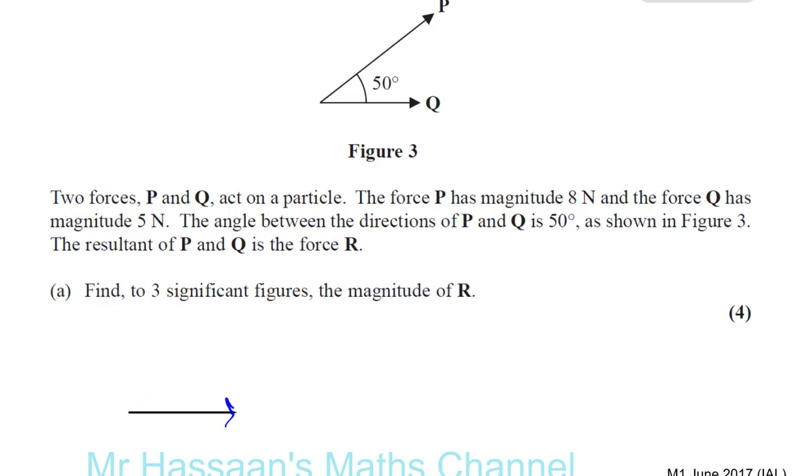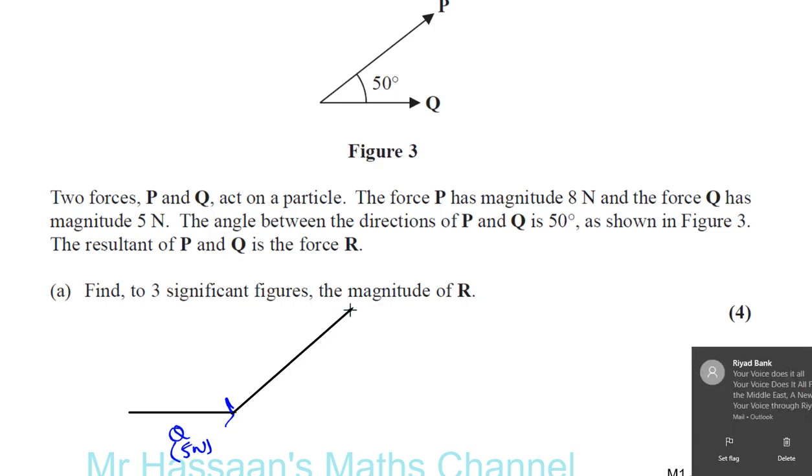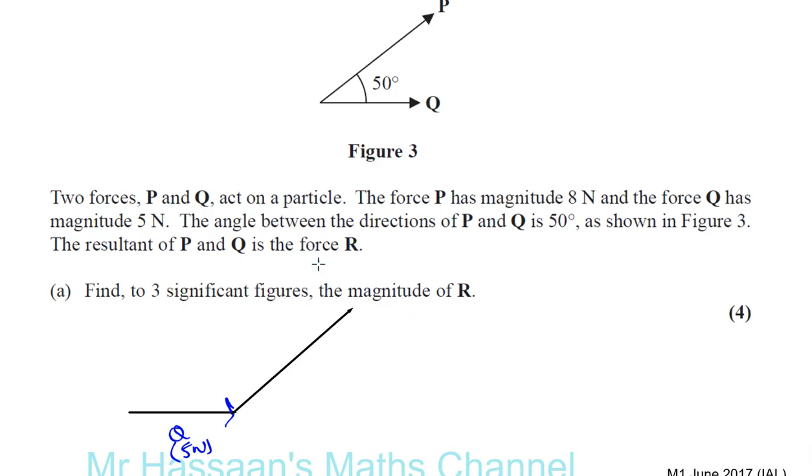Instead of drawing P from the tail of Q, we draw Q over here. And what I'm going to draw is where Q ends, I'm going to draw P. So Q is your force of 5 newtons. And now where Q ends, that's where we draw P. So now this is your force P. We're drawing this where Q ends, and I know that this angle here is 50, so this angle here is 130.